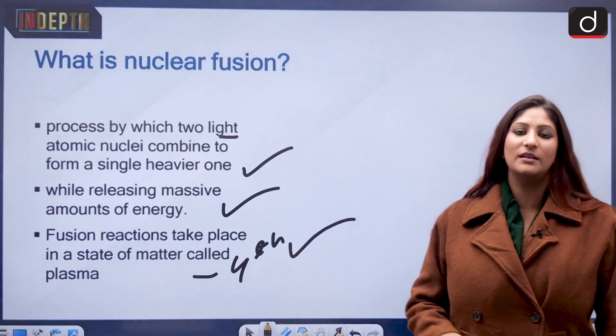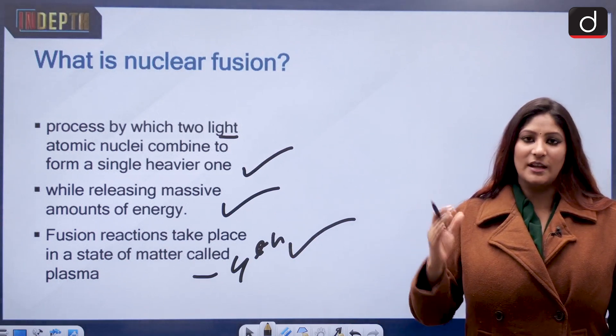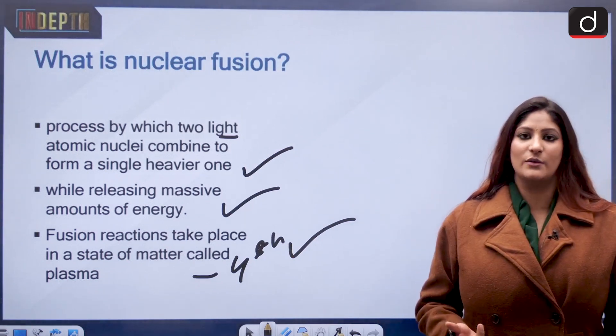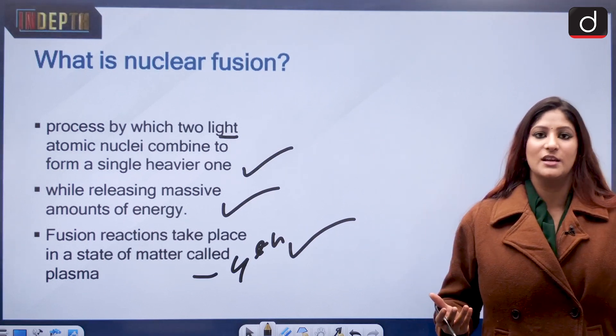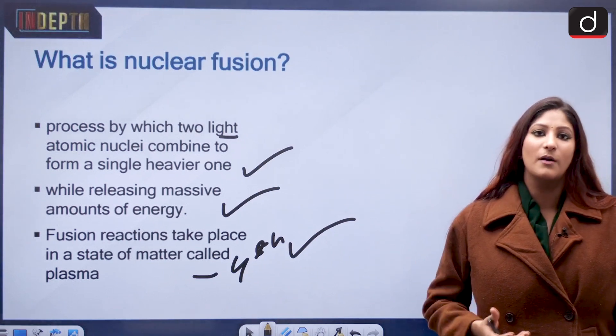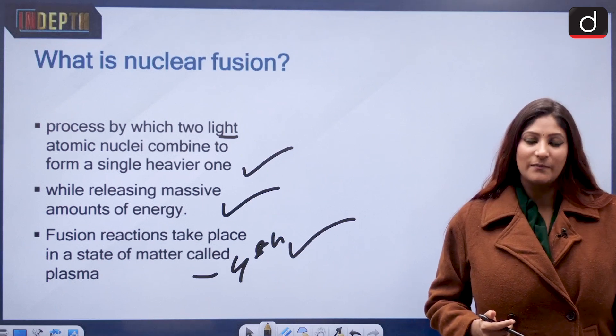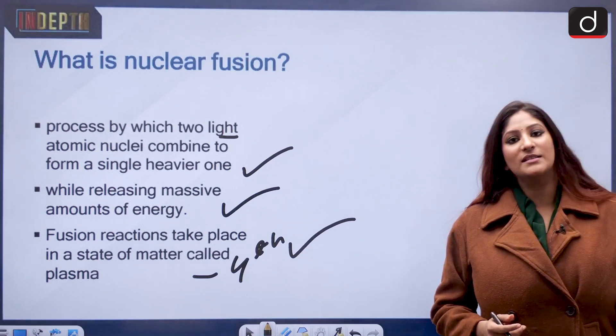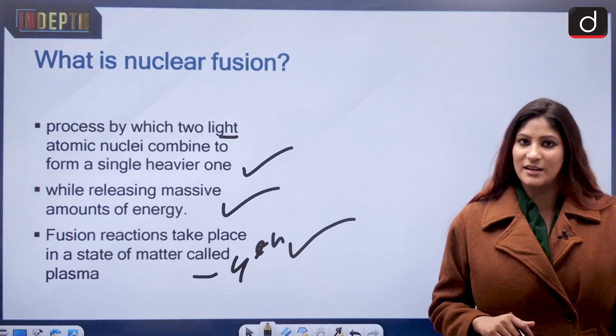Plasma is the fourth state of matter. Basically, understand it like this: when liquid boils it turns into gas. When we add heat to liquid it turns into gas. Furthermore, when we add heat to the gas, it turns into a soup of positively charged ions and negatively charged ions.